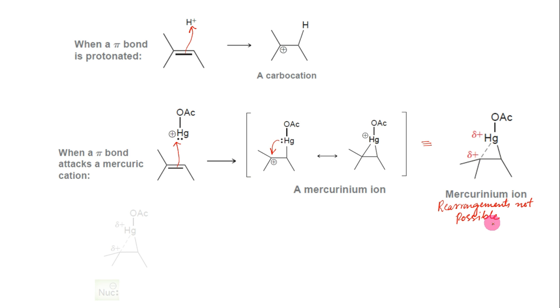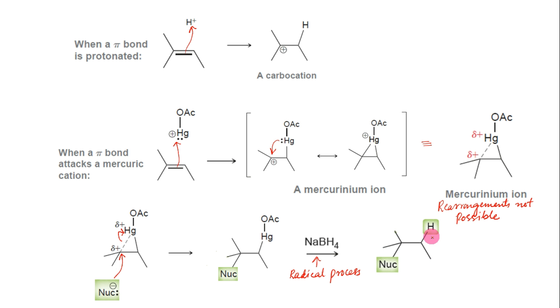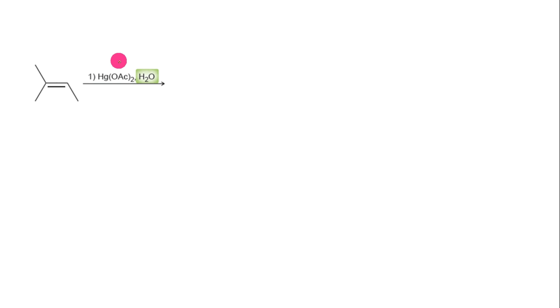The attack of the nucleophile takes place at the more substituted position, ultimately leading to Markovnikov's addition. After attack of the nucleophile, the mercury can be removed through a process called demercuration, which is generally accomplished with sodium borohydride. There is much evidence that demercuration occurs through a radical process. The net result is the addition of H and a nucleophile across an alkene.